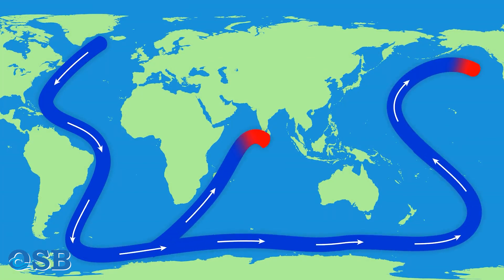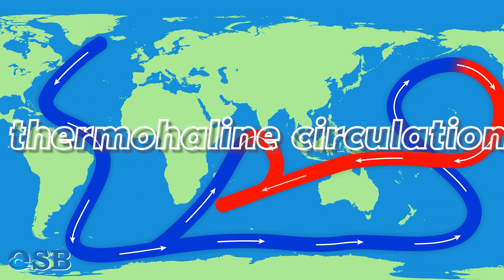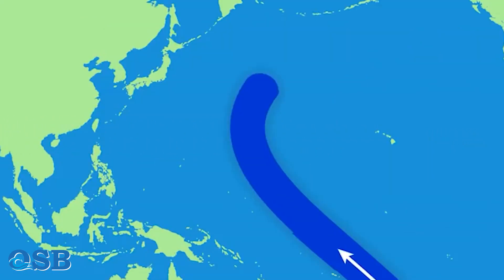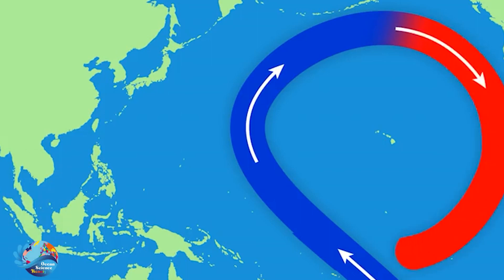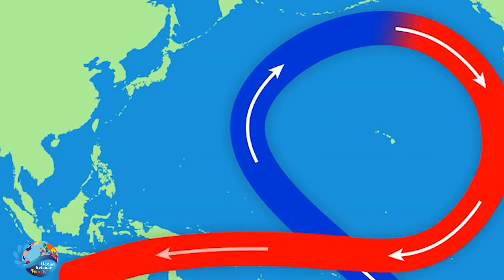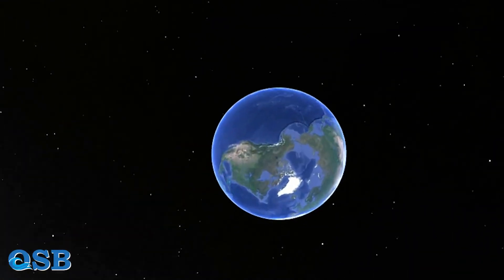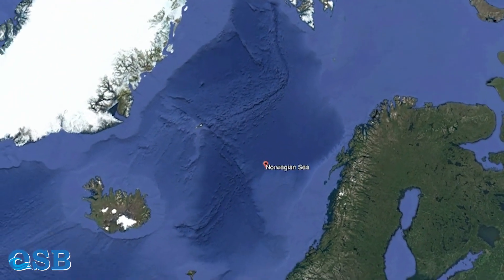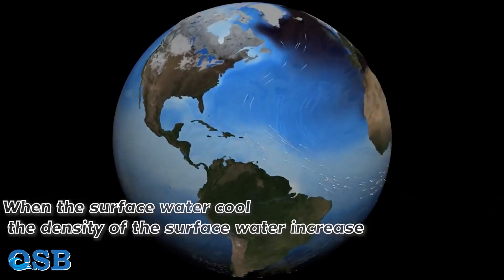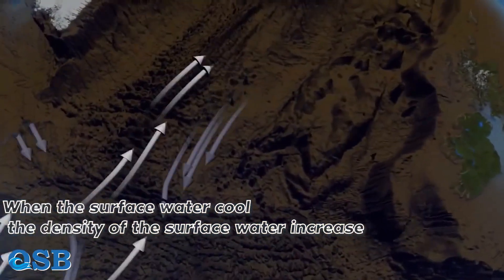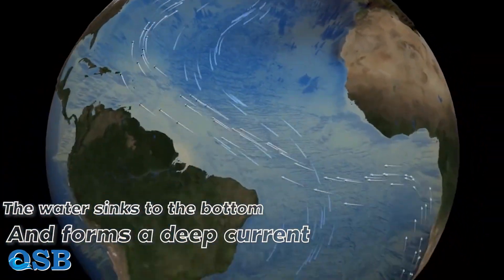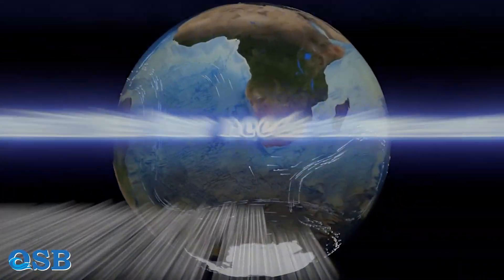One effect of this is thermohaline circulation. Warm and salty surface waters move from low latitudes to high latitudes. The main difference between high and low latitudes is the weather temperature. In high latitudes, for example Greenland or Norwegian seas, the weather is very cold. When the surface water cools, the density of the surface water increases, so the water sinks to the bottom and forms a deep current.